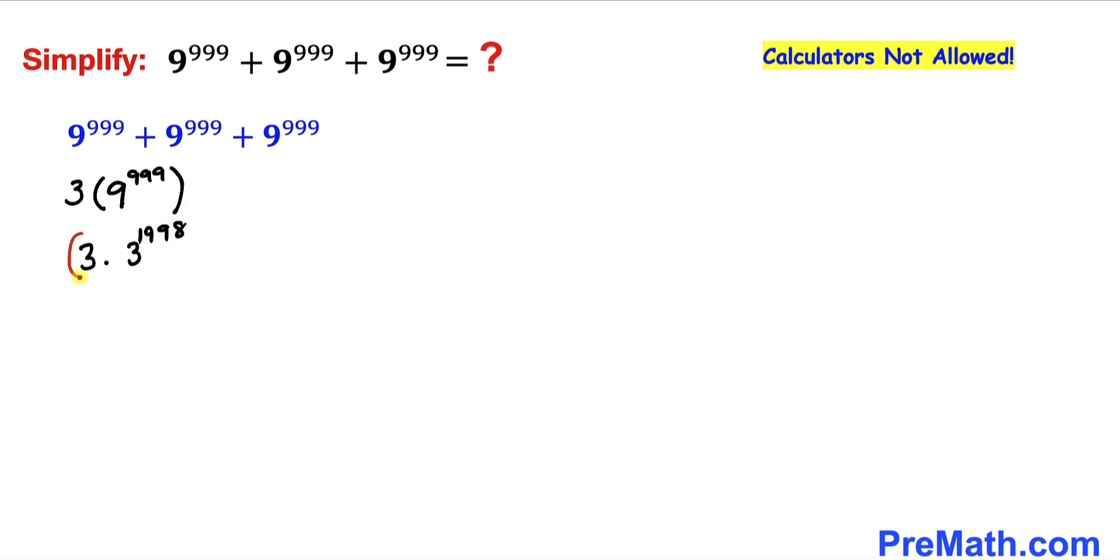And now we can see this 3. 3 could be written as 3^1. Now let's recall this product rule of exponents. According to this rule we are going to add these two exponents.